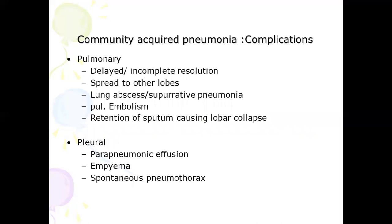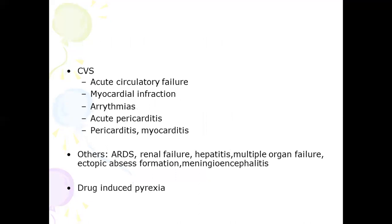Moving on to the complications of community-acquired pneumonia: pulmonary complications include delayed or incomplete resolution, spread to other lobes, lung abscess, aspiration pneumonia, pulmonary embolism, or retention of sputum causing lobar collapse. Pleural complications include parapneumonic effusion, empyema, and spontaneous pneumothorax. Cardiovascular complications include acute circulatory failure, myocardial infarction, arrhythmia, acute pericarditis, or myocarditis. Other complications include ARDS, renal failure, hepatitis, multi-organ failure, ectopic abscess formation, meningoencephalitis, and drug-induced pyrexia.